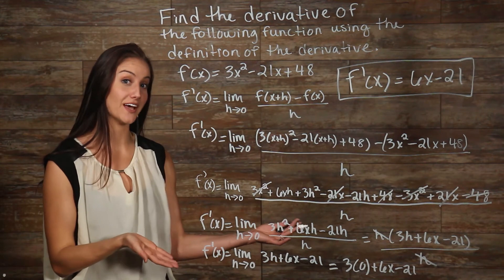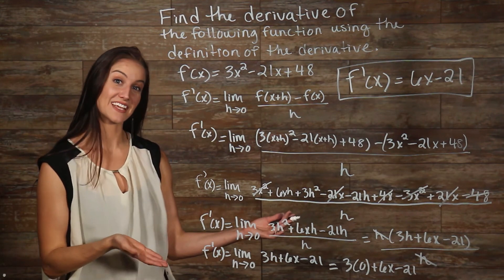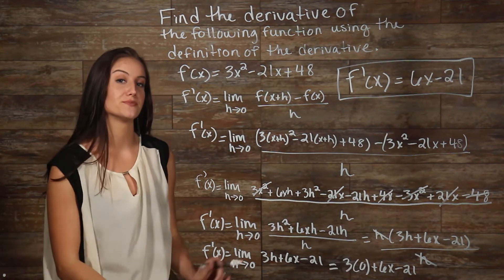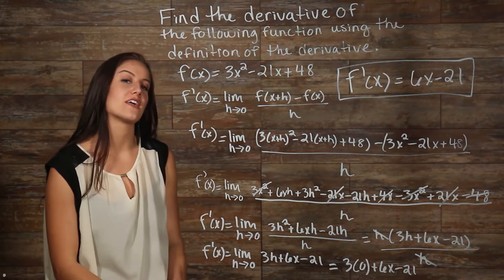The derivative of our function is f prime equals 6x minus 21. This is simple enough. We just plug in all our numbers into the definition and do some algebra. Let's take a look at another example.